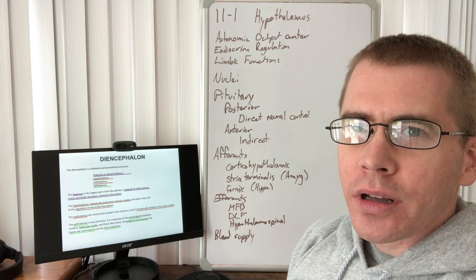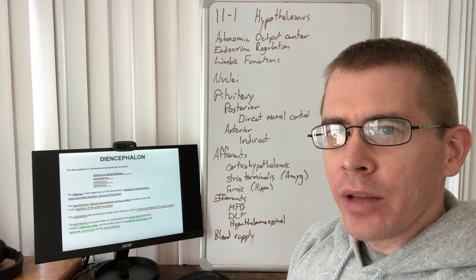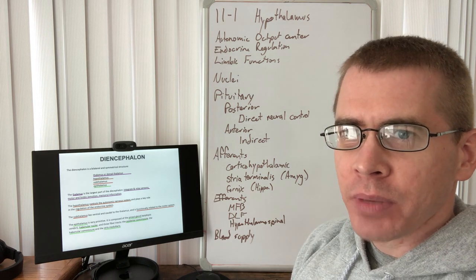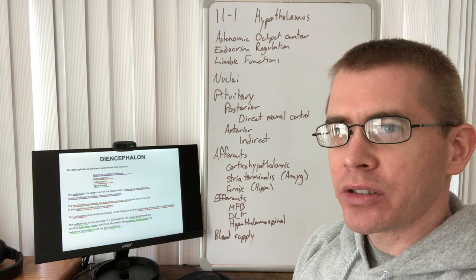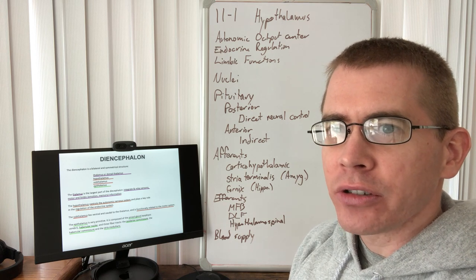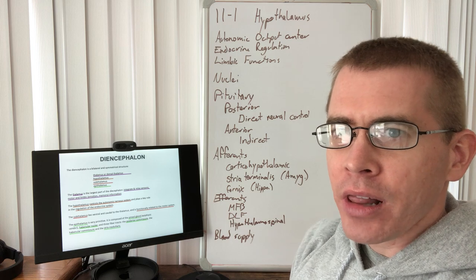Welcome to lecture 11-1. This time we're going to be talking about the hypothalamus. We've mentioned many of the different regions of the diencephalon already, especially the thalamus. We talked about the subthalamic nucleus and the subthalamus and its relation to the basal ganglia. Now we're going to be talking about the hypothalamus.